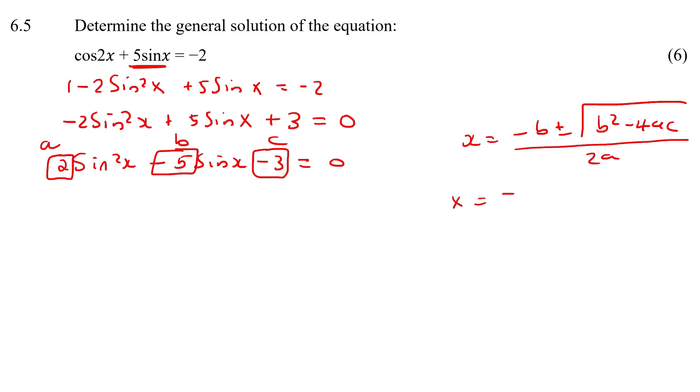So it's negative 5 as your b, a is 2, and then negative 3. And then at the bottom like that. What you should then get for sin x is 3. So you'll say sin x equals 3 or sin x equals negative a half.